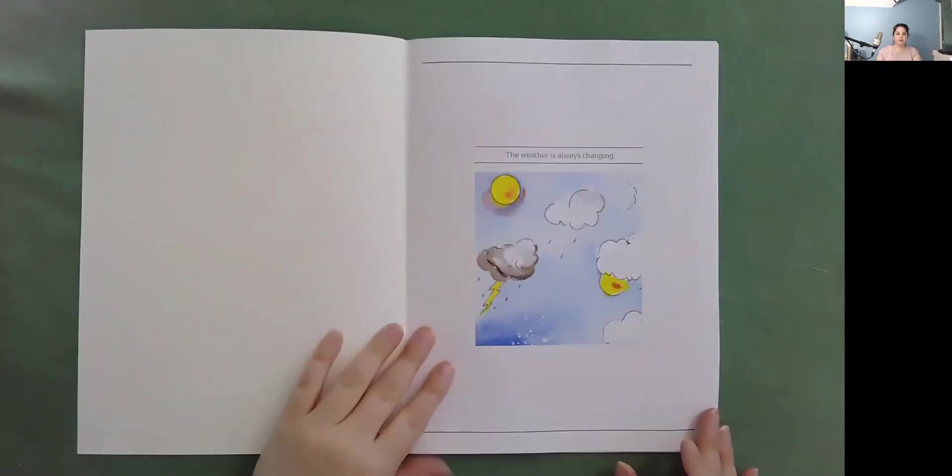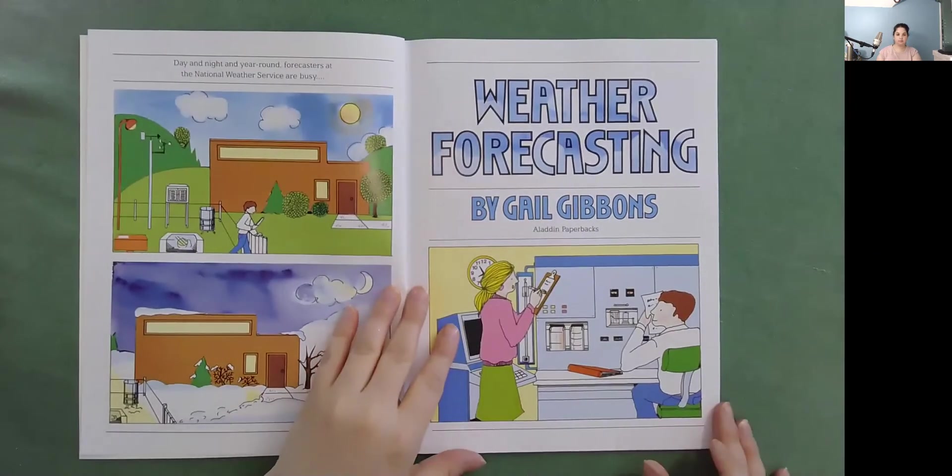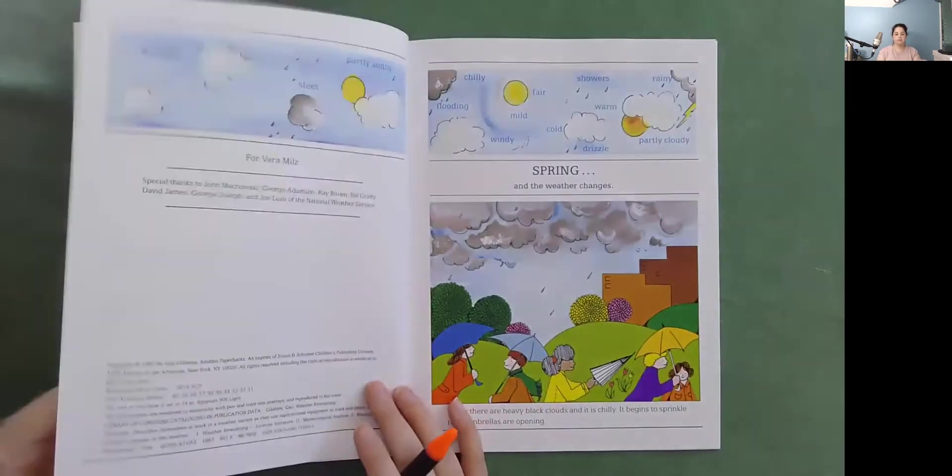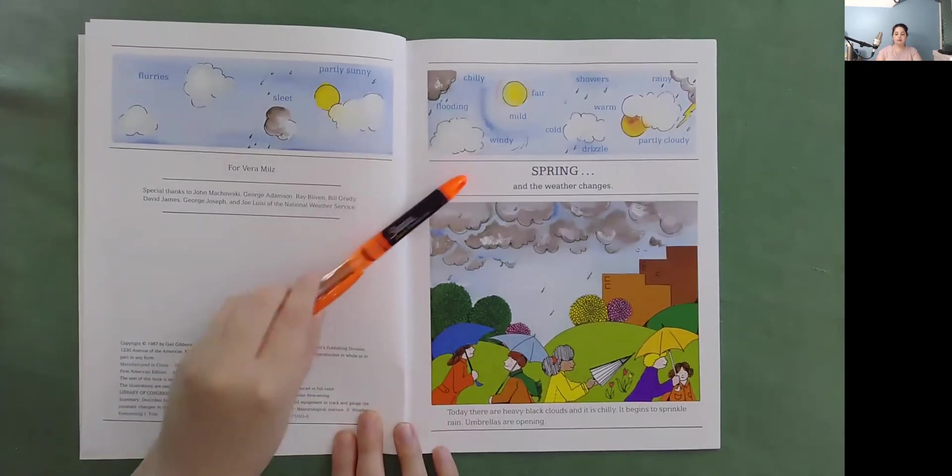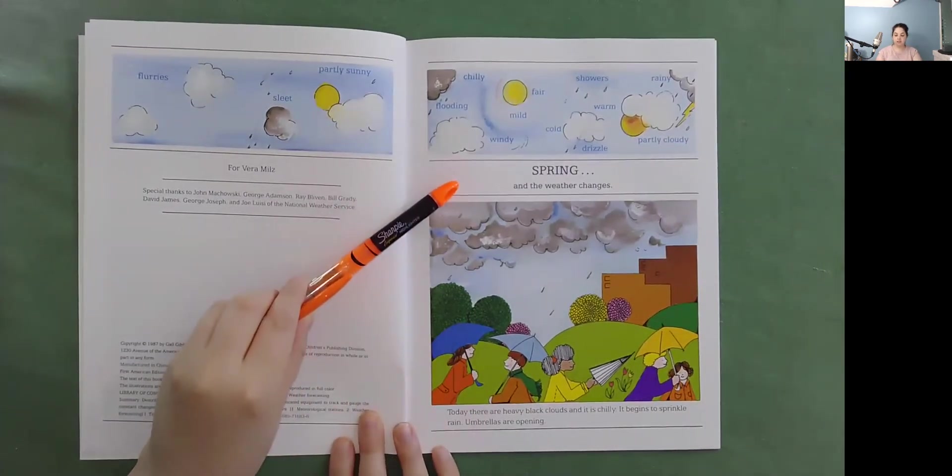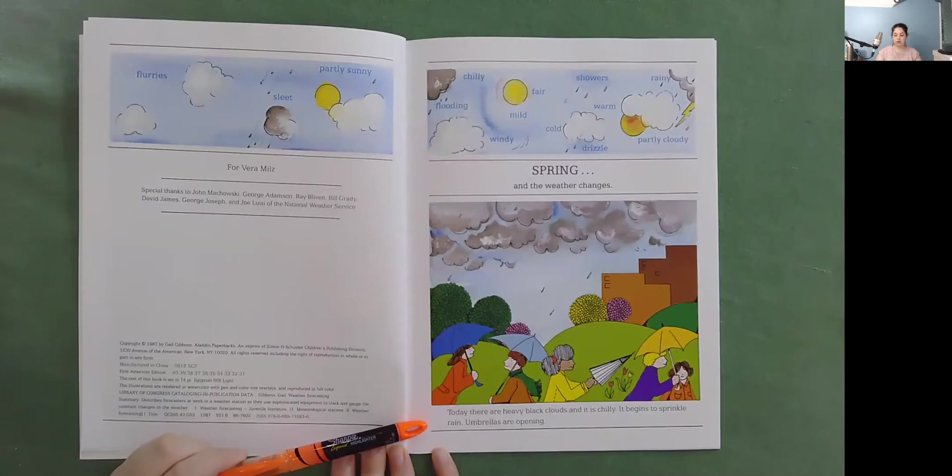The weather is always changing. Spring and the weather changes. Today there are heavy black clouds and it is chilly. It begins to sprinkle rain. Umbrellas are opening.